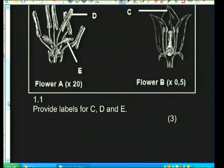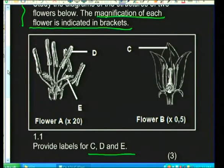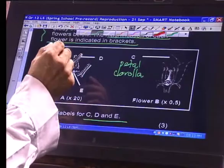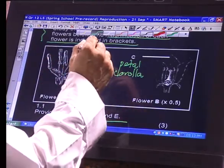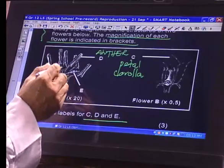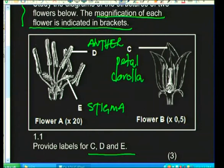The first question is easy: provide labels for C, D, and E. Label C points to the outer layer of the flower — that is the petal, or the whole structure is called the corolla. Label D is the anther. Label E is the stigma. So C was the petal or corolla, D the anther, and E the stigma.